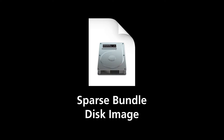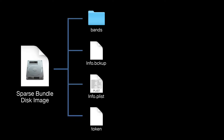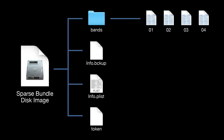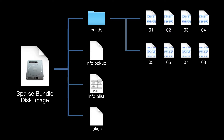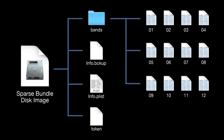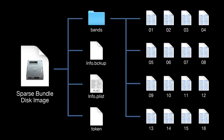Our cloud backup strategy all begins with a disk image — specifically, a special kind of disk image called a sparse bundle. What makes sparse bundles special is that the data stored on them is broken up into multiple equal-sized band files. These band files are typically 8 megabytes in size. As you add more files and data to your volume, more band files are created to store that data.